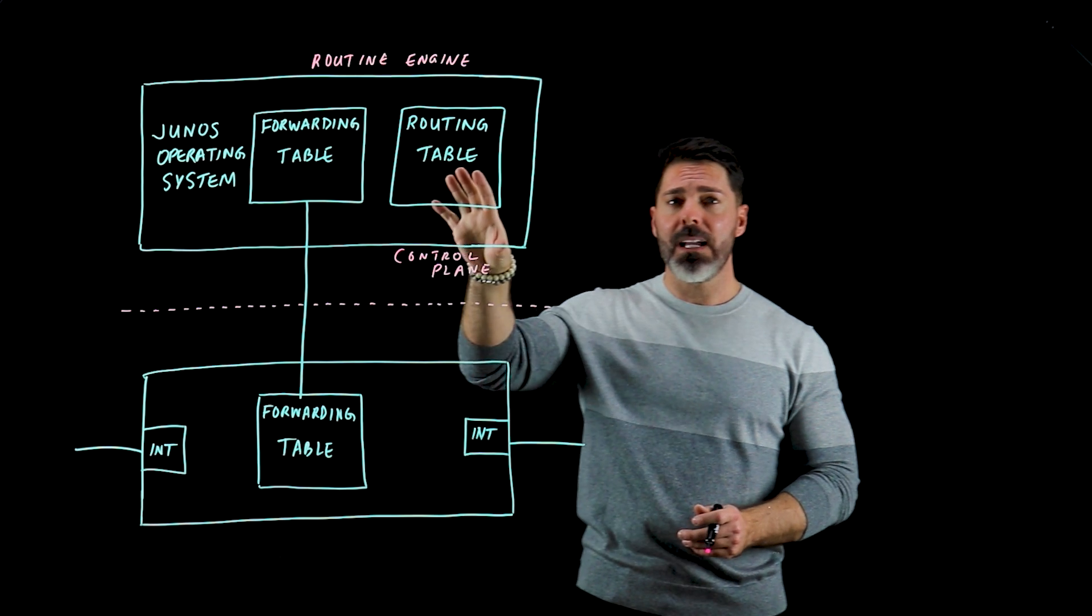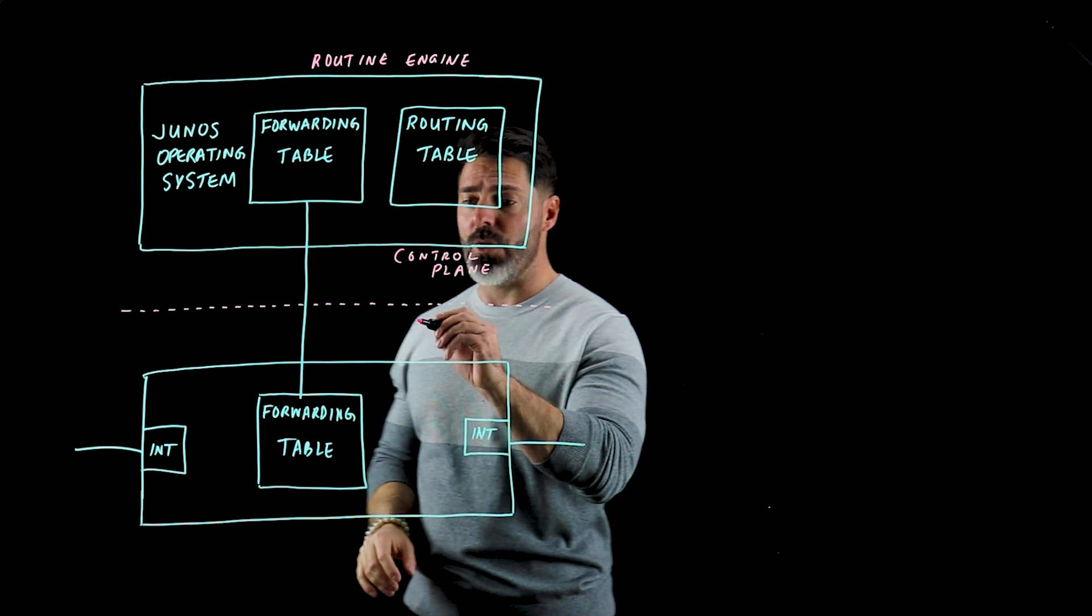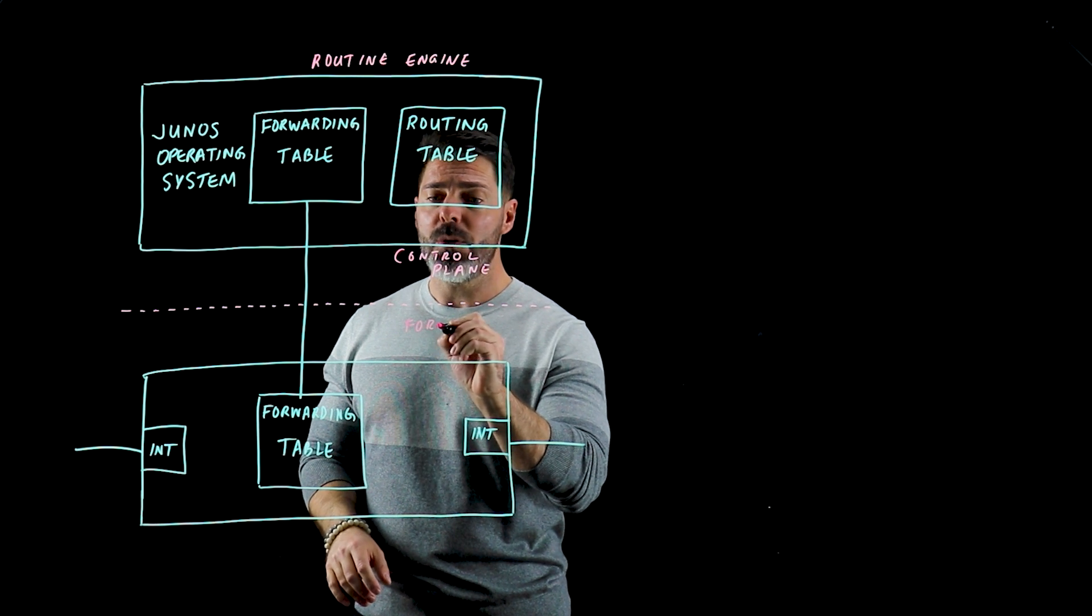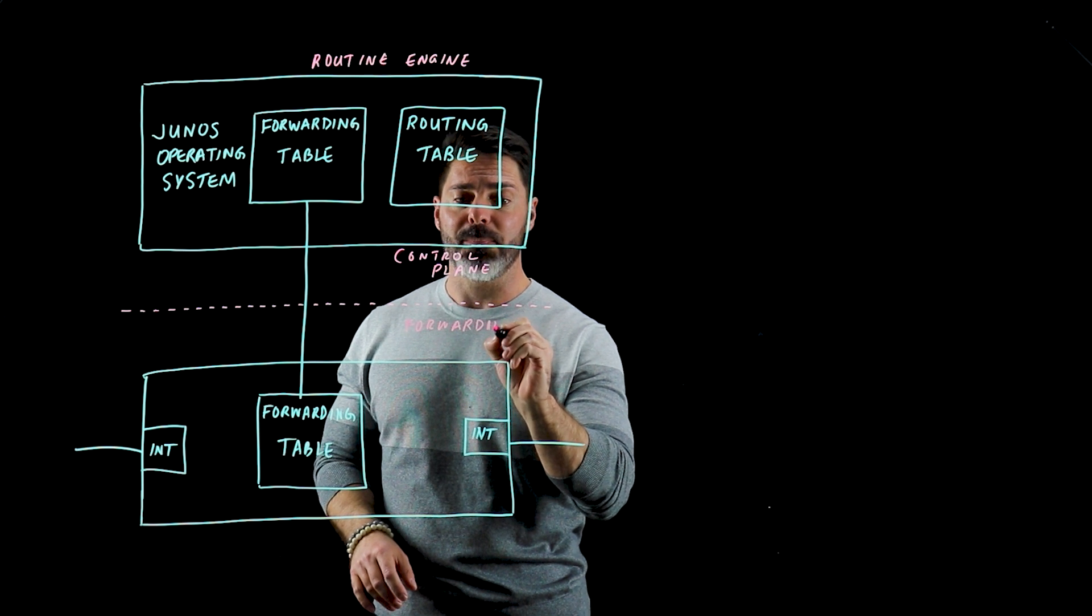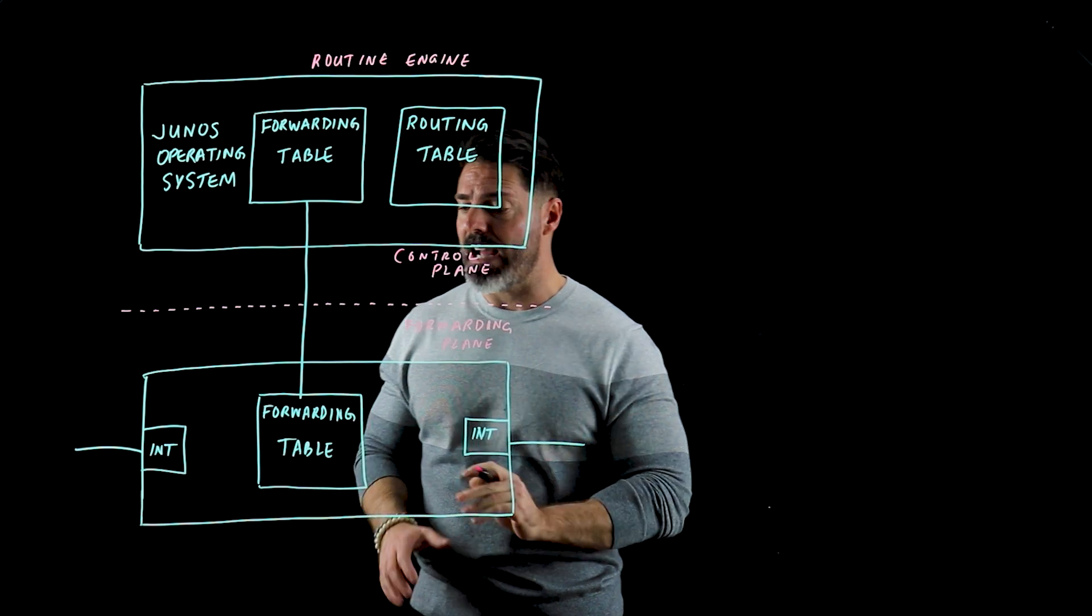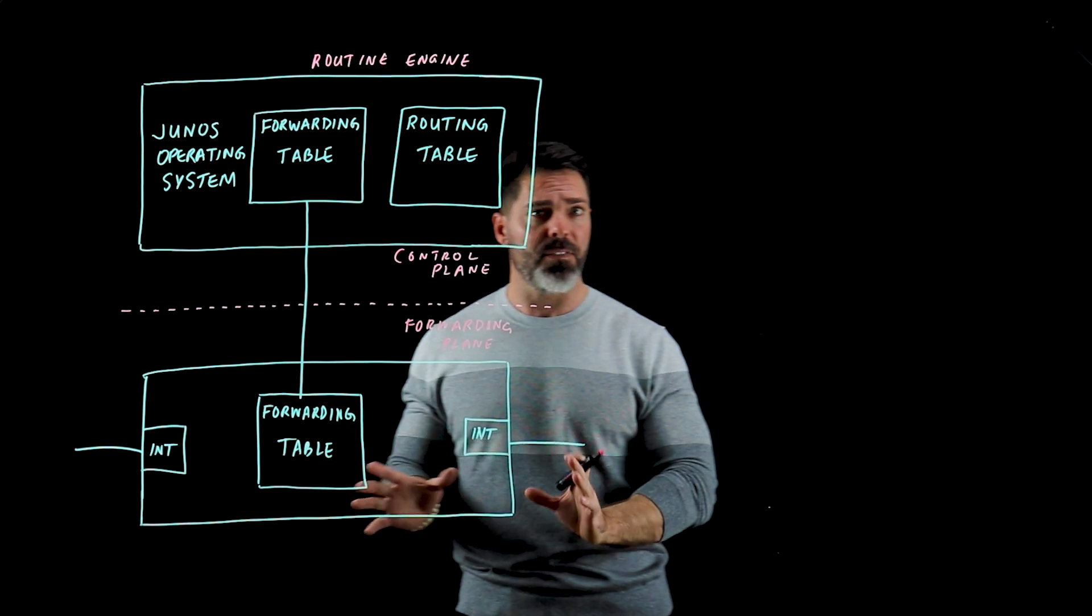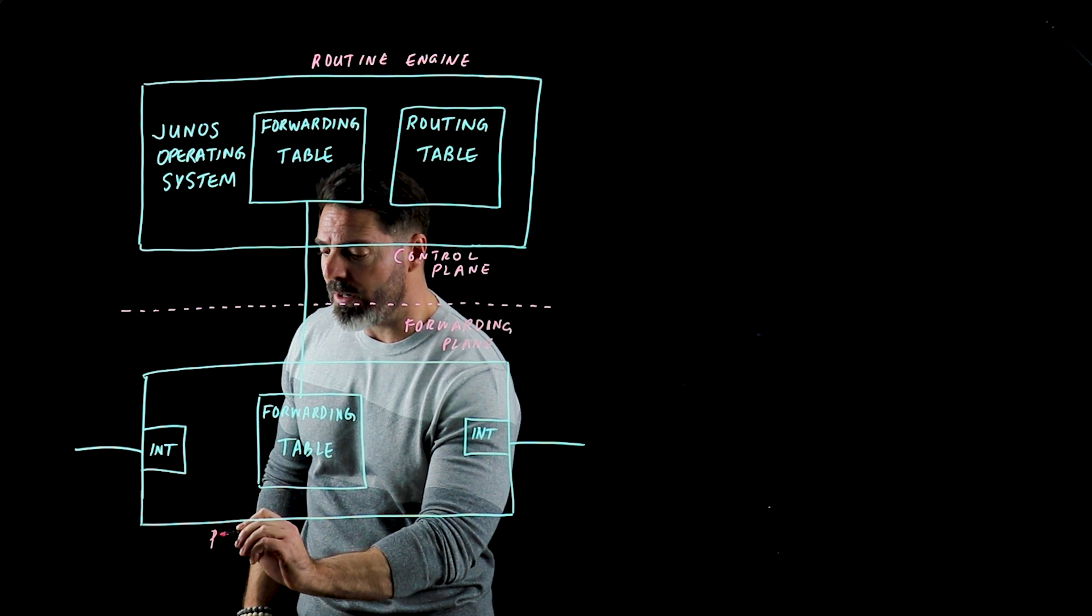Now if the routing engine is the brains of the operation, what we have down below is what's known as the forwarding plane. And the forwarding plane is essentially the brawn of the operation. So with the forwarding plane what we see down here is we have a different set of hardware which is essentially known as our packet forwarding engine.